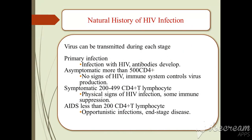The natural history of HIV infection: the virus can be transmitted during each stage. The first stage is primary infection — infection with HIV where antibodies develop to protect the body. Asymptomatic stage: more than 500 CD4 cells. This condition shows no signs of HIV; the immune system controls virus protection.